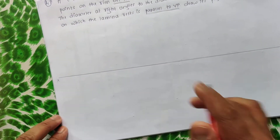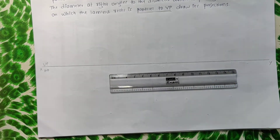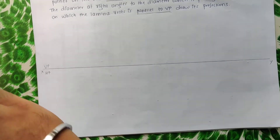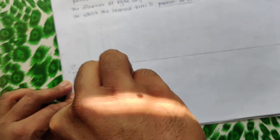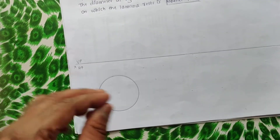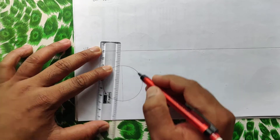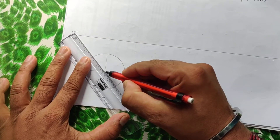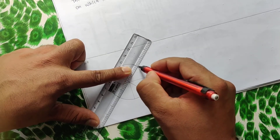I have drawn the XY line representing VP and HP. It is a circle of 50 mm diameter resting on HP, so the radius is 25 mm. Take 25 mm radius and draw the initial position in HP. Now divide this circle into 8 parts using thin lines.